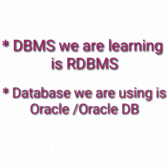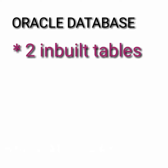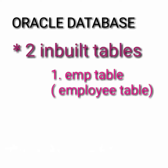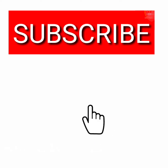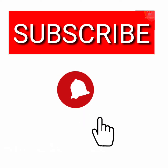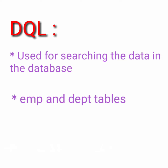The DBMS that we are using is Oracle DB. If you install Oracle database software, you get two inbuilt tables. They are the emp table, which is nothing but the employee table, and the dept table, which is nothing but the department table. These two tables we have inbuilt. DQL language is used for searching the data in the database. We will be searching the complete DQL language in the emp and dept tables.